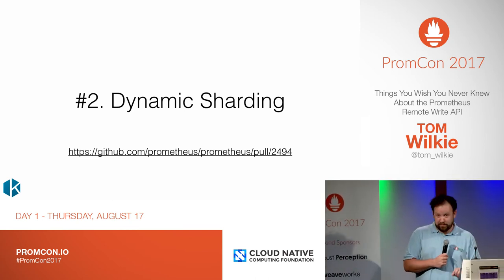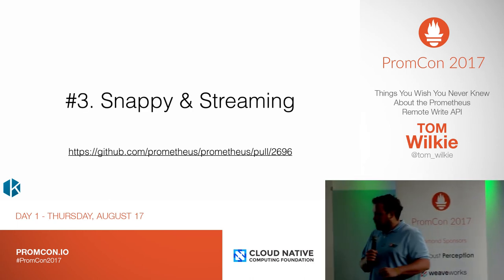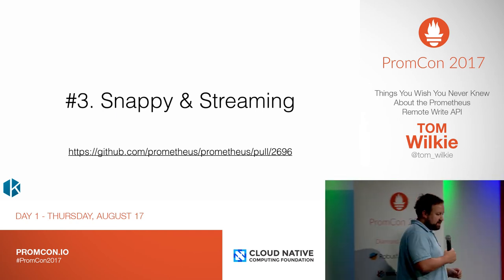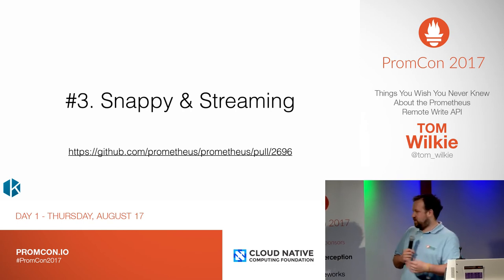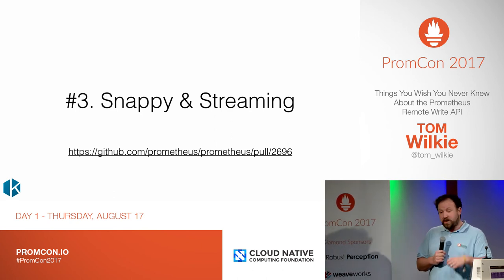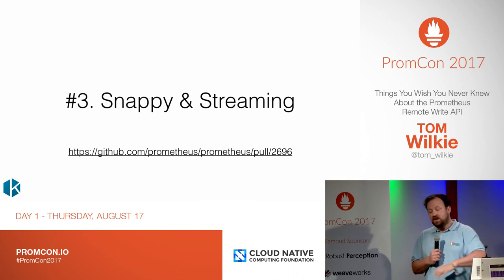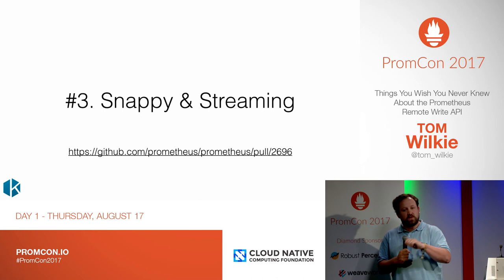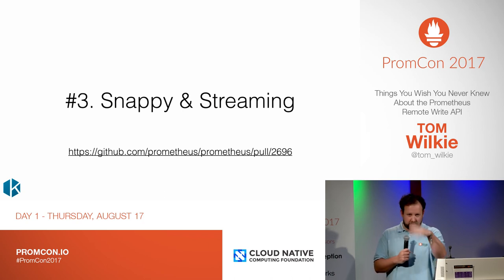These are undocumented, and they're probably going to change. Number three: Snappy and streaming. When we first wrote this, we used Snappy's streaming support, which is in the Go library, but unfortunately this is not part of the Snappy spec. Every language library implements streaming differently using a custom framing protocol. So recently in Prometheus 1.7, we got rid of this streaming framing and just went for raw Snappy. This unfortunately means anything that was working with 1.6 won't work with 1.7. We did do a version bump — there's a header field on the HTTP request — so you can detect this. If you want to see an example of how to handle both, look at the Cortex code.